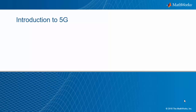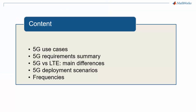This is the first episode of our series 5G Explained. In this video we go over the main goals and basic configuration of 5G new radio systems. We will look at use cases for 5G NR, requirements associated with those use cases, some of the main differences between 5G NR and LTE, and deployment scenarios envisioned by the 3GPP standardization body. Finally, we'll touch upon carrier frequencies for 5G NR.